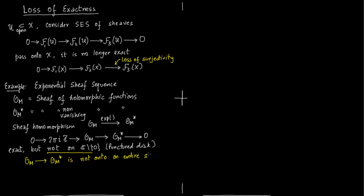Why is this so? Because the identity function, which is a part of O_M*, is not an exponential of a holomorphic function on ℂ minus zero. The identity function does not come from any section of O_M on ℂ minus zero, because exp(0) gives you the identity function but zero is not even in the punctured disk.